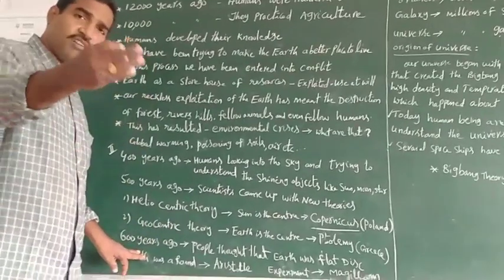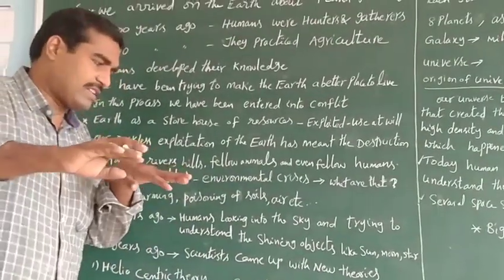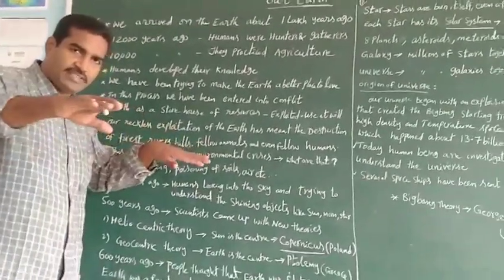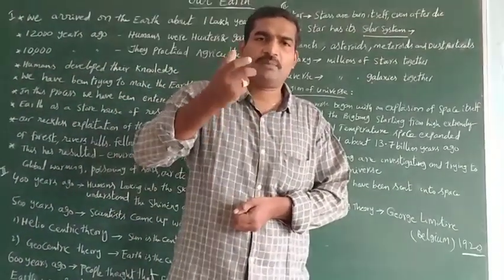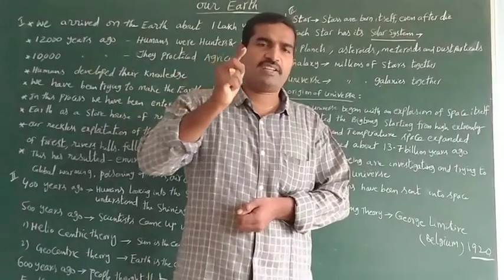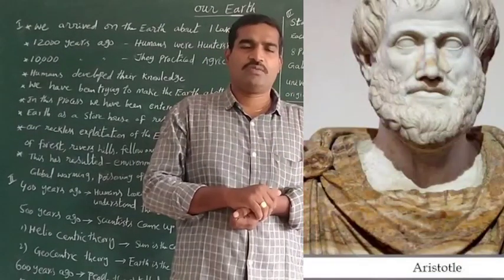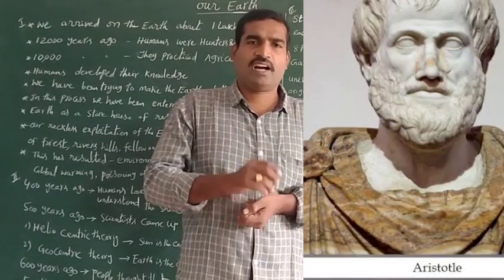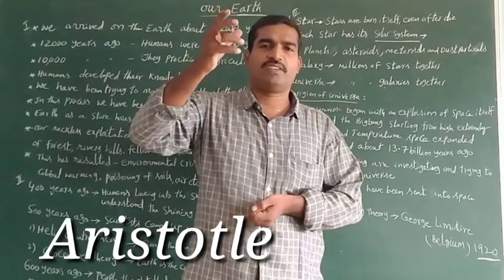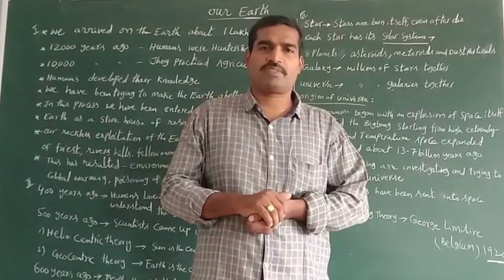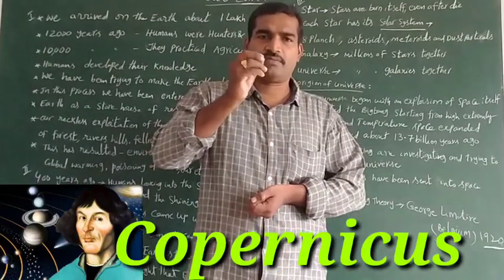600 years ago, people thought that the Earth was a flat disc. Initially, one scientist first said — without experiment — that the Earth was round. His name was Aristotle. Similarly, another scientist, Copernicus, also said that the Earth was round.